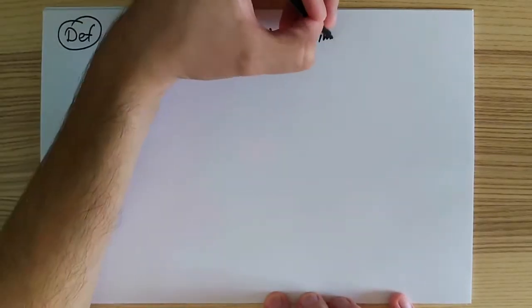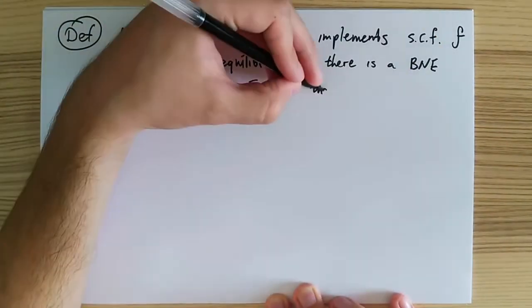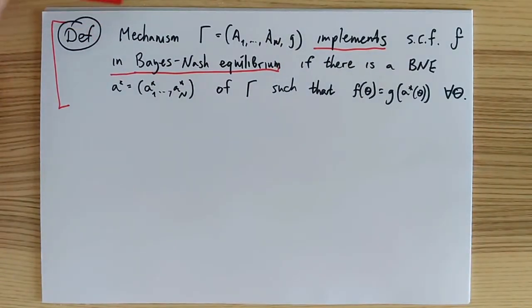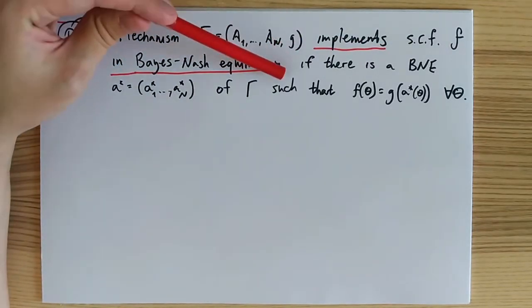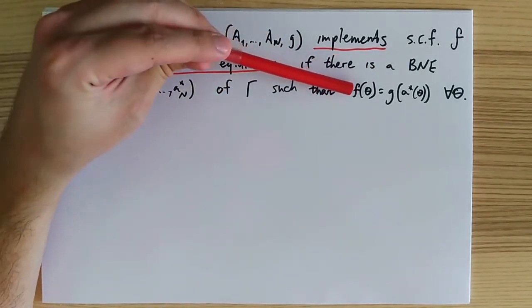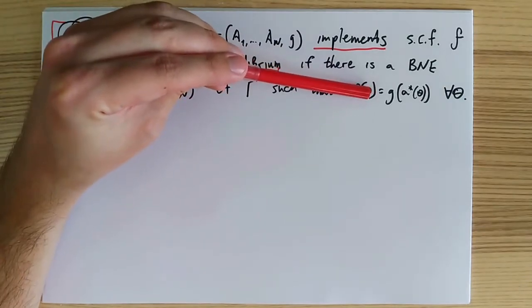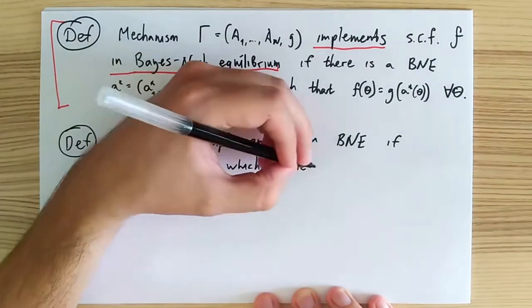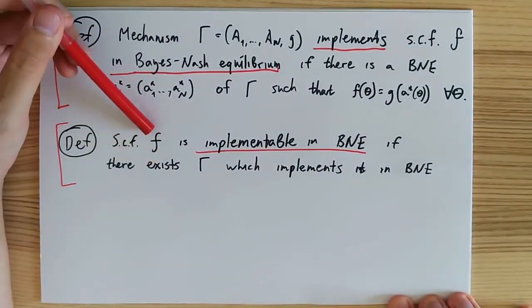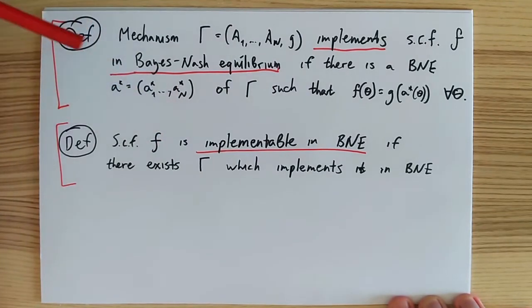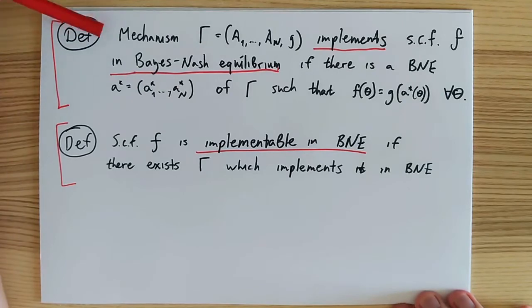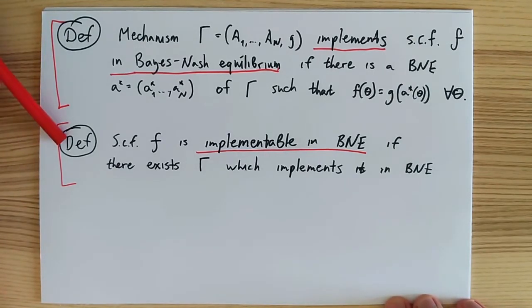Now that we have our equilibrium concept, we can introduce the implementation concept. We will say that mechanism gamma implements social choice function f in Bayes Nash equilibrium if the game induced by mechanism gamma has a Bayes Nash equilibrium that leads to the same outcome as the one prescribed by f for any type profile theta. We will then say that a social choice function f is implementable in Bayes Nash equilibrium if there exists some mechanism gamma that implements it in Bayes Nash equilibrium. To clarify, the first definition concerns whether a given mechanism gamma implements a given social choice function, while the second asks whether there is any mechanism gamma that implements this given social choice function.